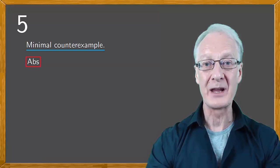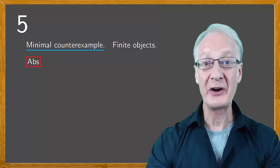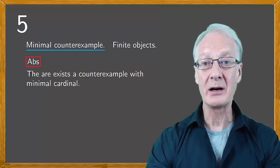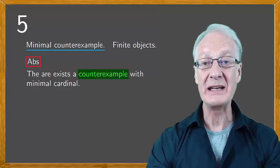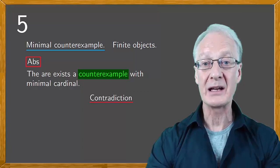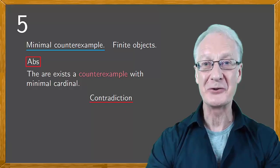The minimal counterexample arises when we want to prove a result and we assume by reduction to the absurd that it is not true. If the objects we work with are finite, there will be a minor cardinal where the property fails. Then, we analyze how this counterexample has to be, and in the end, we reach a contradiction. An example that doesn't exist. Therefore, the property is shown to be true.